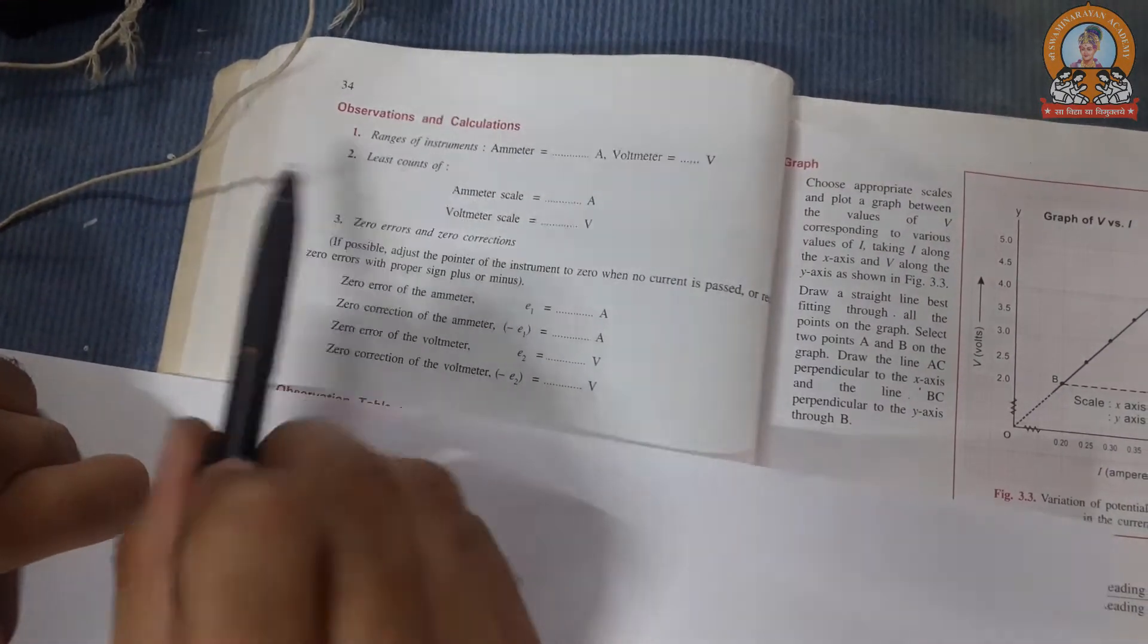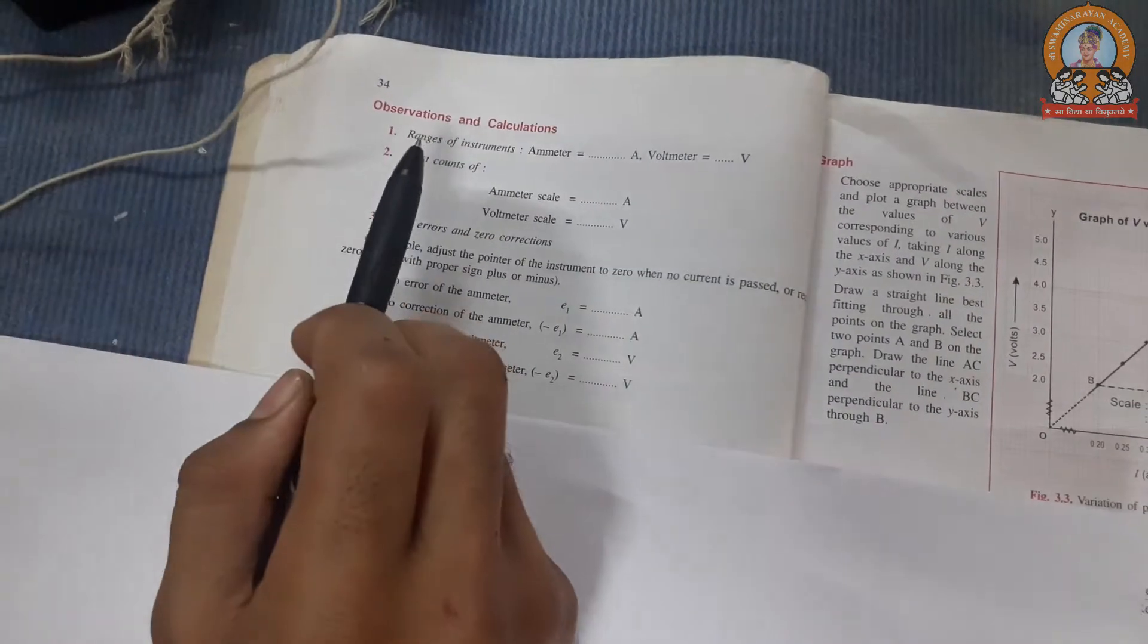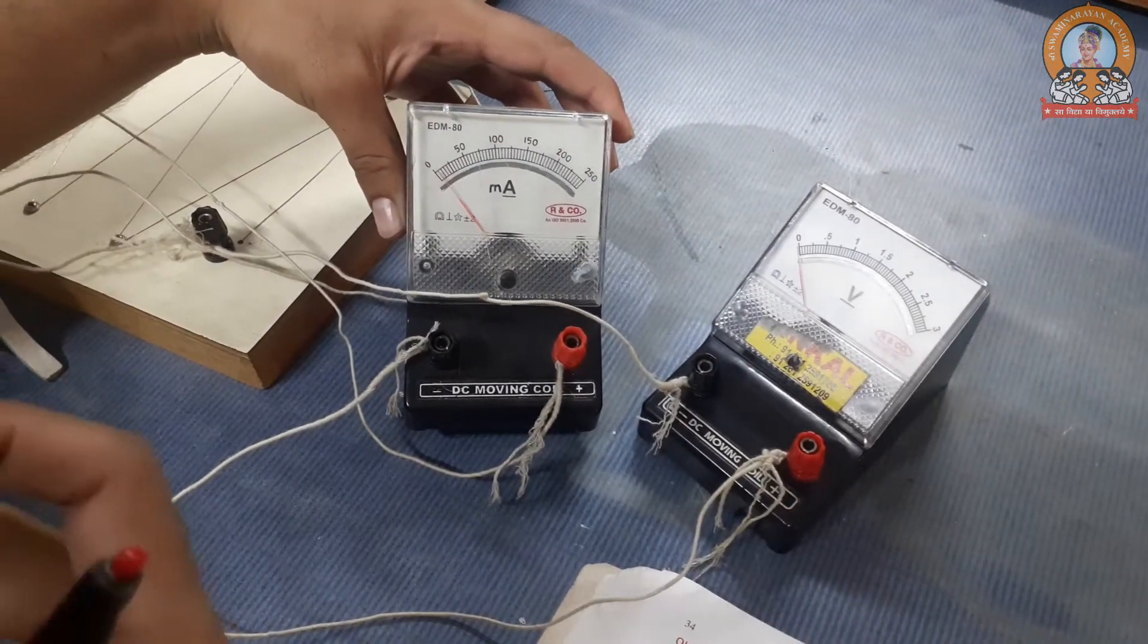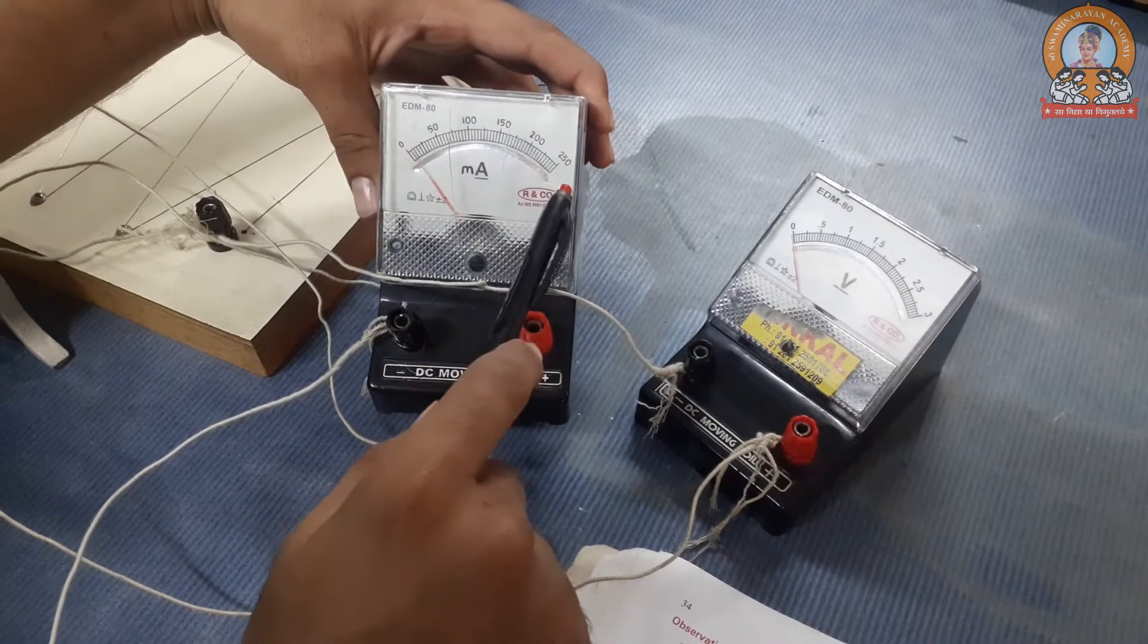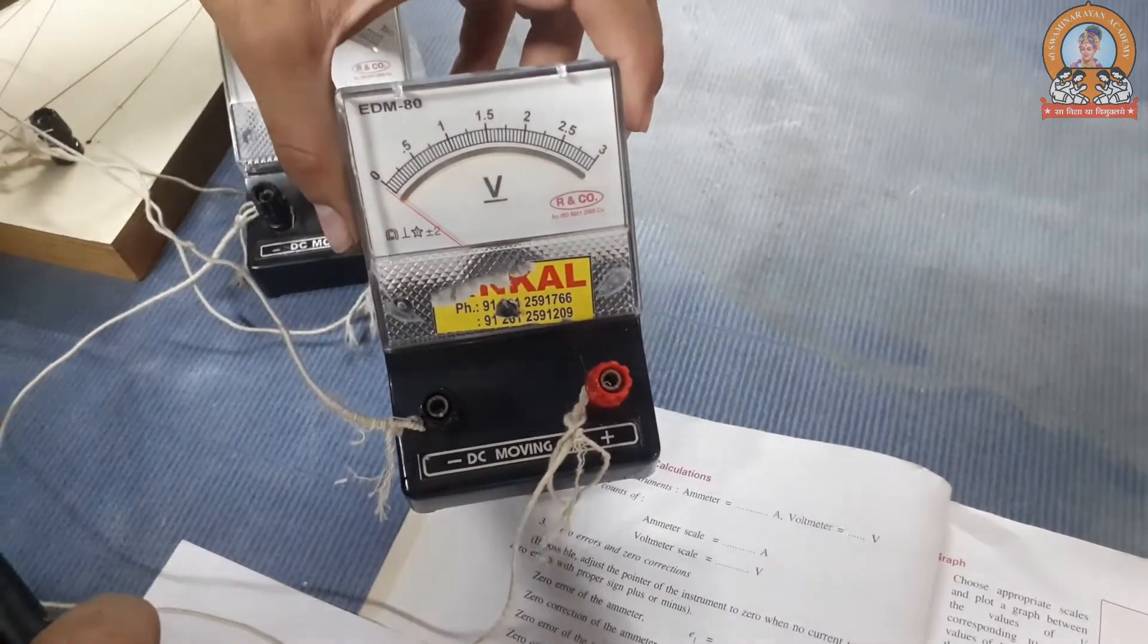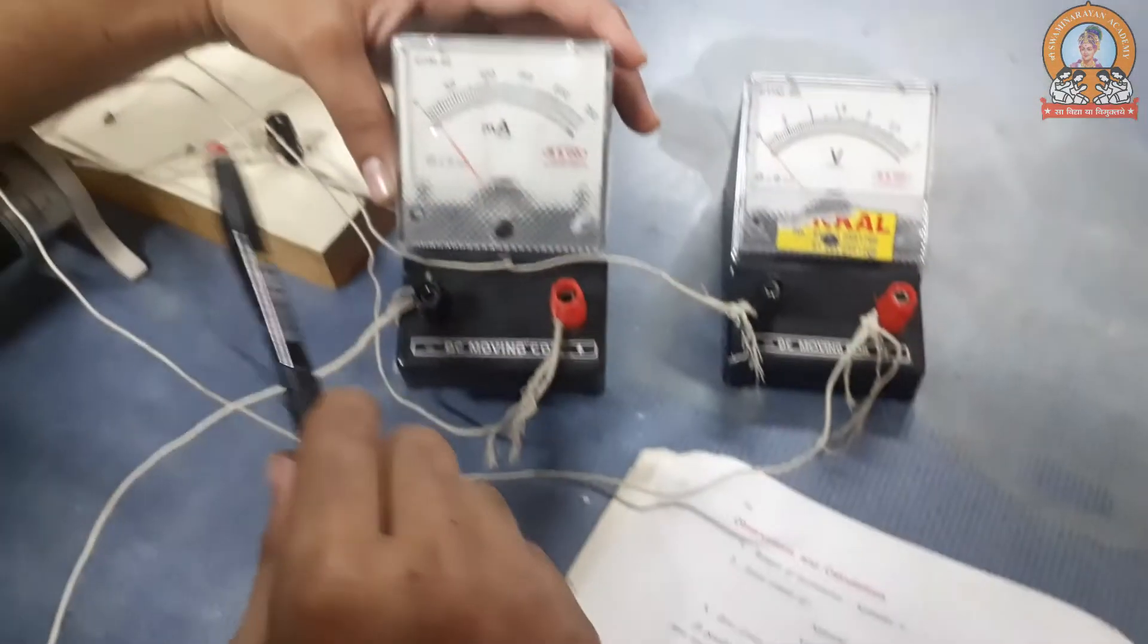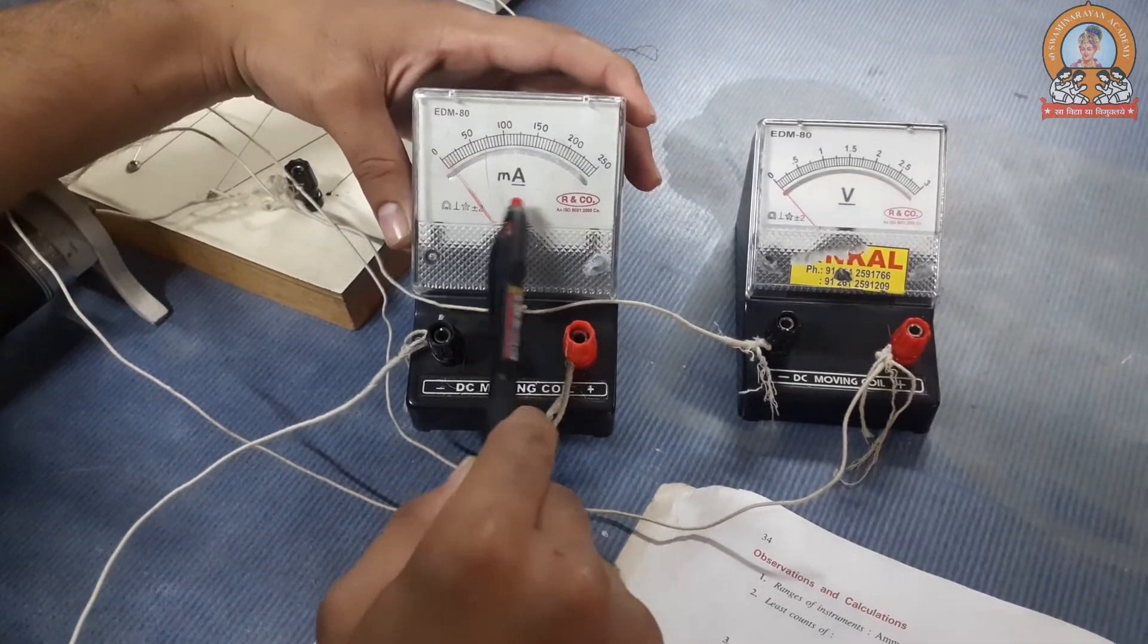Before moving towards the observation table, we will see ranges of the instrument. Range of ammeter is from 0 to 250, that is 250 milliampere. For voltmeter it is 0 to 3 volt, that is its range is up to 3 volts. Least count of ammeter scale is 50 divided by 10, and that is 5 milliampere. In case of voltmeter that is 0.5 divided by 10 divisions, so it will be 0.05 volt.